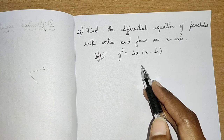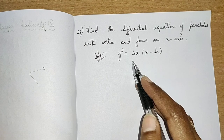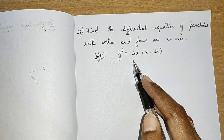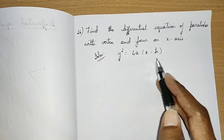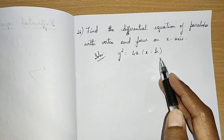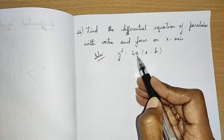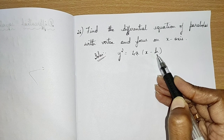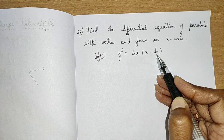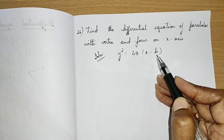The formula for such parabolas is y² = 4a(x − h). We can see there are 2 arbitrary constants — a and h — which means we have to differentiate twice.